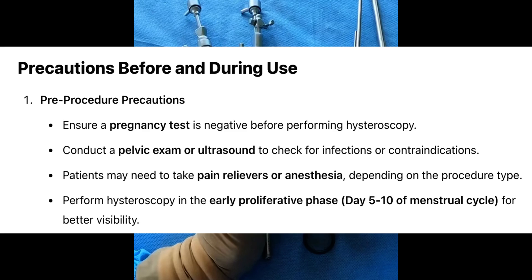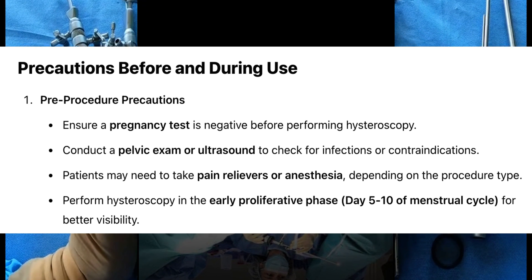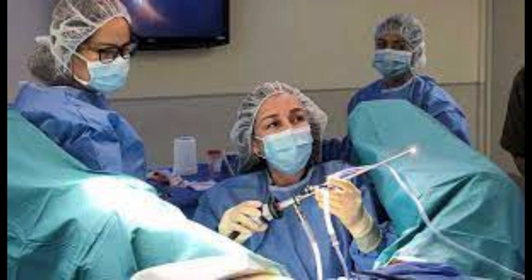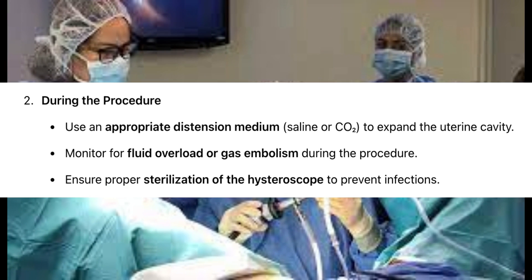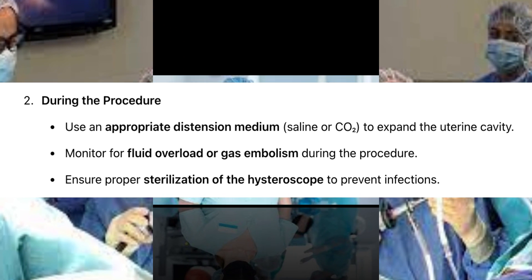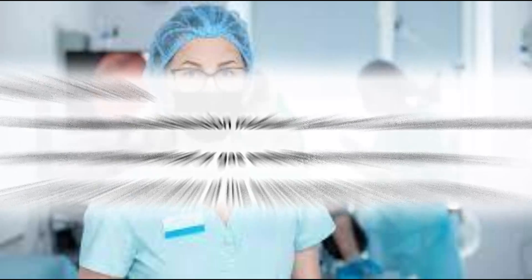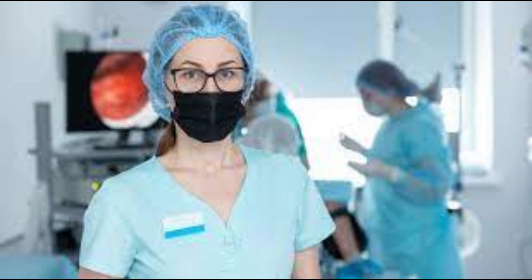Precautions before and during use. Pre-procedure: ensure a pregnancy test is negative before performing hysteroscopy; conduct a pelvic exam or ultrasound to check for infections or contraindications; patients may need pain relievers or anesthesia; perform hysteroscopy in the early proliferative phase, day 5 to 10 of the menstrual cycle, for better visibility. During the procedure: use an appropriate distension medium (saline or CO2) to expand the uterine cavity; monitor for fluid overload or gas embolism; ensure proper sterilization of the hysteroscope to prevent infections.